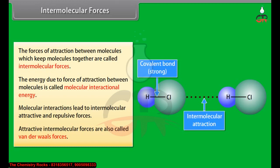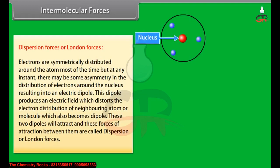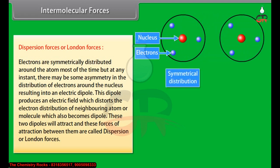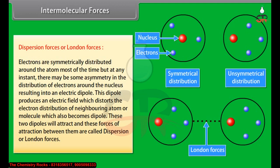Attractive intermolecular forces are also called Van der Waals forces. Dispersion forces or London forces: Electrons are symmetrically distributed around the atom most of the time, but at any instant there may be some asymmetry in the distribution of electrons around the nucleus, resulting in an electric dipole. This dipole produces an electric field which distorts the electron distribution of a neighboring atom or molecule, which also becomes a dipole. These two dipoles will attract, and these forces of attraction are called dispersion or London forces. It occurs in non-polar molecules and even noble gases. One atom has symmetrical distribution and the other has unsymmetrical distribution, and the atom with unsymmetrical distribution distorts the electron distribution of the other atom, resulting in a force of attraction.